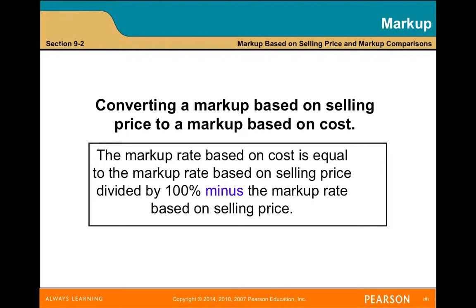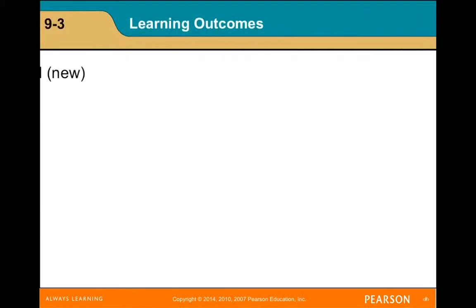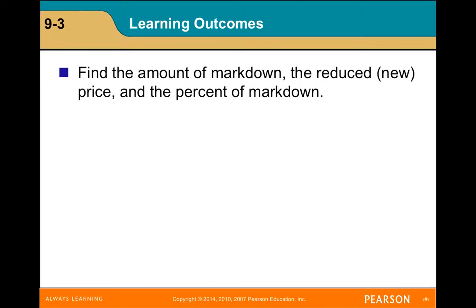Converting a markup based on selling price to a markup based on cost: the markup rate on cost equals the markup rate based on selling price divided by (100% minus the markup rate on selling price). Converting a markup based on cost to a markup based on selling price: the markup rate based on selling price equals the markup rate based on cost divided by (the markup rate based on cost plus 100%).